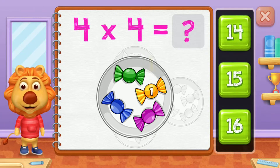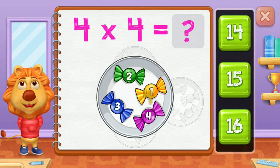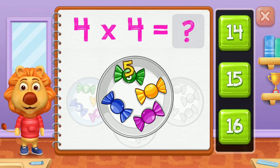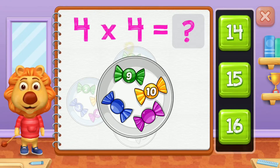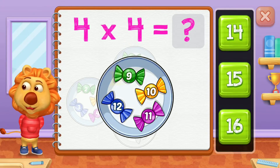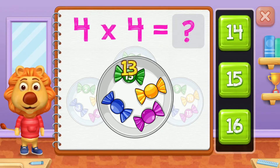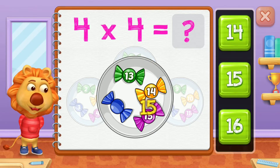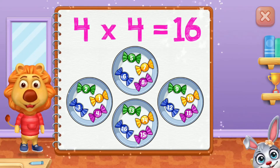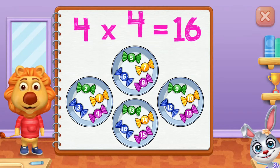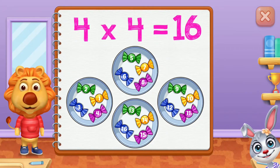One, two, three, four, five, six, seven, eight, nine, ten, eleven, twelve, thirteen, fourteen, fifteen, sixteen! 4 groups of four equals sixteen!